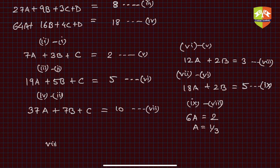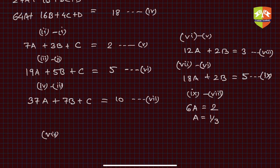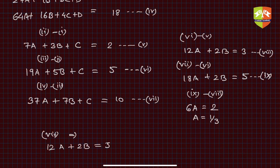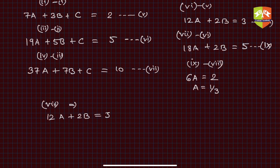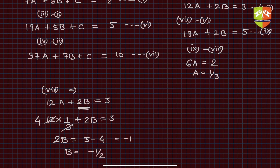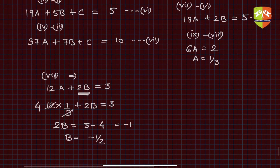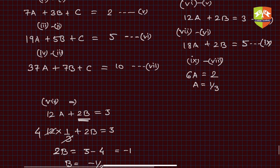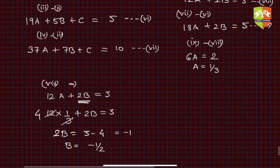From equation 8, with a = 1/3: 2b = 3 − 4 = −1, so b = −1/2. Now to find c, we use equation 5: 7a + 3b + c = 2. Substituting a = 1/3 and b = −1/2 gives 7/3 − 3/2 + c = 2.